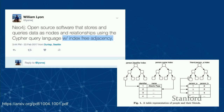So back to our tweet: Neo4j is open source software that stores and queries data using the property graph model with nodes and relationships, and the Cypher query language. The final bit is index-free adjacency, a very important performance characteristic that separates graph databases from other databases. Index-free adjacency means we can traverse from one node to any connected node without doing an index lookup, so performance depends on the number of relationships traversed, not the overall size of the data.